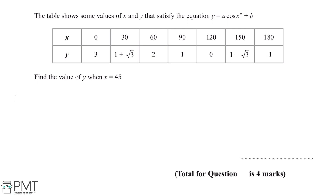In order to work out this question, we're going to substitute two sets of values for x and y from this table into this equation to work out the values of a and b. Since the equation contains cos x, we can choose two values for x which will not include surds to make the question easier. So we choose x equals 0 and x equals 90.